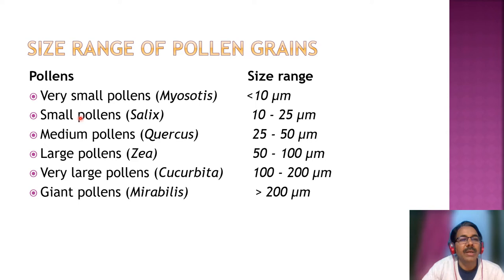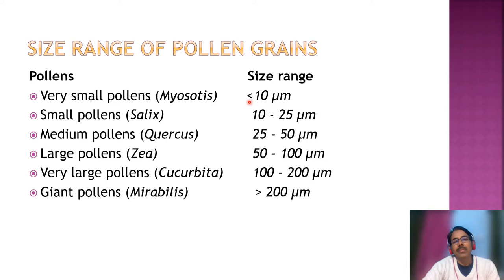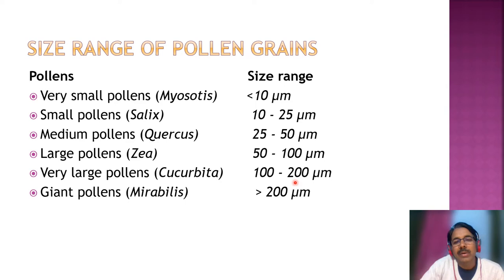According to size range, pollen grains have been categorized as: very small pollens — as in Myosotis — below 10 micrometers; small pollens — as in Salix — 10 to 25 micrometers; medium pollens, 25 to 50 micrometers; large pollen, 50 to 100 micrometers; very large pollen, 100 to 200 micrometers; and giant pollen grains with size above 200 micrometers.